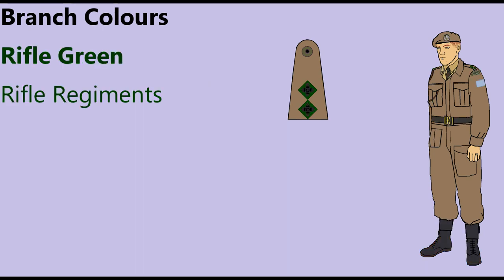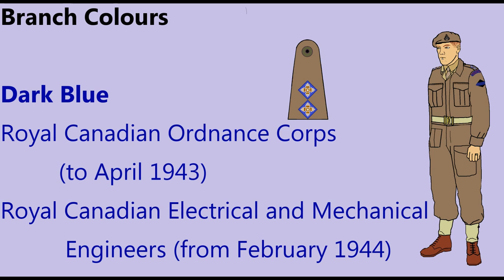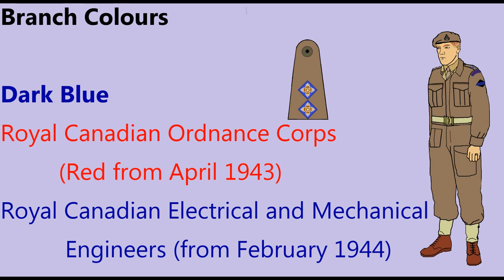Rifle green badge backings with black rank was permitted for officers of rifle regiments, with exceptions made for regimental customs such as the Queen's Own Rifles, who wore red and black badges. The Royal Canadian Ordnance Corps wore dark blue until April 1943 when it changed to red, and the Royal Canadian Electrical and Mechanical Engineers adopted dark blue on formation of the Corps in February 1944.